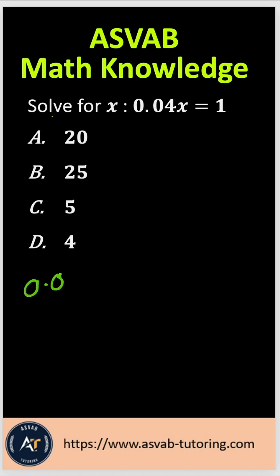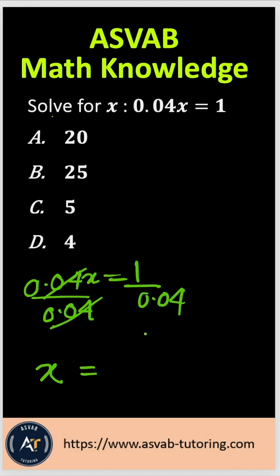So you have here 0.04x = 1. In order to solve this, what do you have to do? You have to divide both sides by 0.04. So now what do you have? You cancel out 0.04, so you have x, and then you have to divide 1 by 0.04.